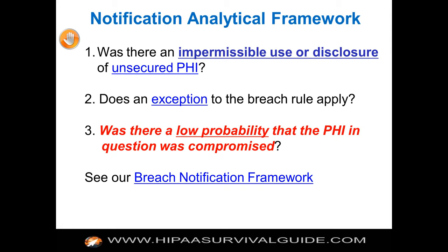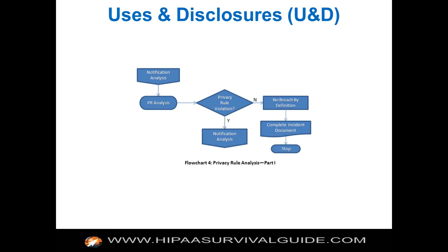The first question — was there an impermissible use or disclosure — really means: was there a violation of the privacy rule? If there's no violation of the privacy rule, there can't be any breach by definition. So here's a flow chart: you get an incident and ask, was the privacy rule violated? If no, there's no breach by definition — complete the incident document and stop.